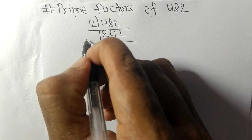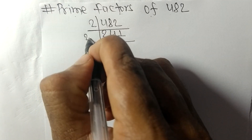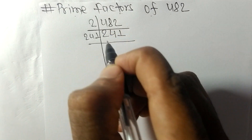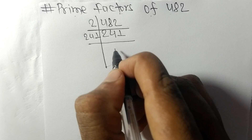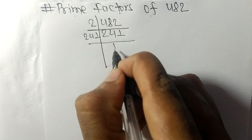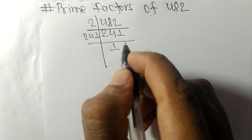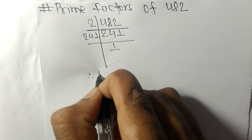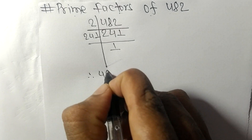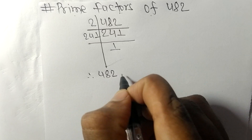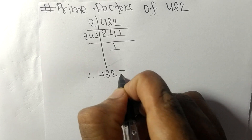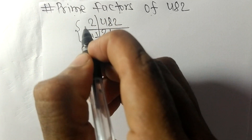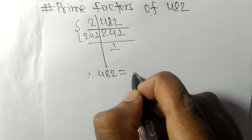Since 241 is prime, it is divisible by 241 itself and we get 1. Therefore, 482 equals 2 times 241.